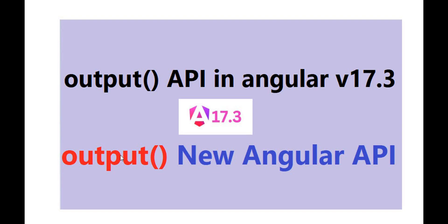Hello everyone, welcome back to the DotNet Office. Today we are discussing the new Angular API that is the output() function. It got introduced in Angular version 17.3, although it is in preview state, but we are good to implement it in our application.